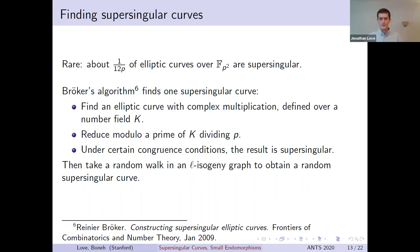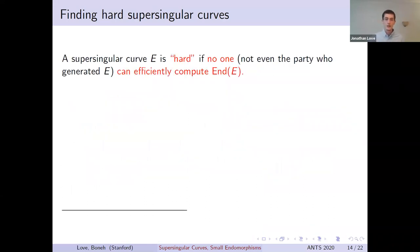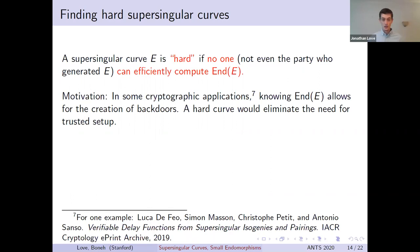In some situations, however, this approach may not be sufficient. There are certain applications that call for the existence of a hard curve, that is, a curve for which no one, not even the party who generated the curve, knows how to compute the endomorphism ring. The reason this may be desirable is that there are certain cryptographic applications that can be easily backdoored if the endomorphism ring is fully known. See the reference here for an example of a verifiable delay function that has this property. So if you don't trust the generator of the curve, you might prefer that the curve be generated using a technique that can't be taken advantage of in this way.